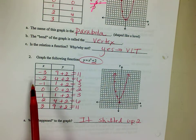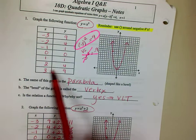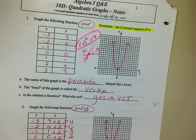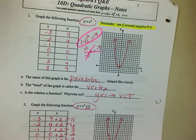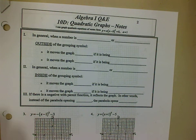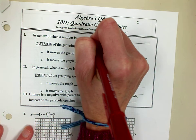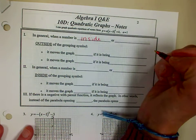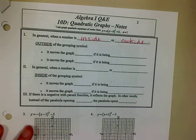We're not going to graph parabolas this specific way. We're always going to use this kind of table after we move either left, right, up, or down, which we've done many times when we go and graph. So let's go to the next page. In general, we're going to talk about when a number is inside parentheses versus when it's on the outside of parentheses.